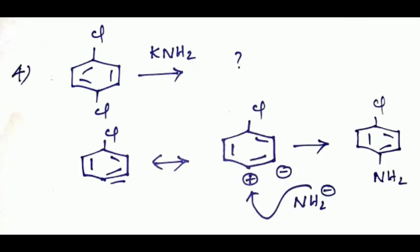Fourth example: para-dichlorobenzene. NH2 minus removes the meta position hydrogen and the para position Cl to form benzyne in step 1. In step 2, the meta position has negative charge and the para position has positive charge. The nucleophile NH2 minus attacks at the para position, and we get para-aminochlorobenzene — a single product.